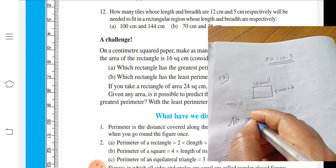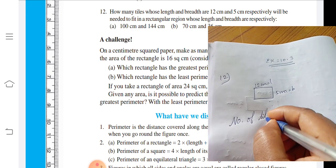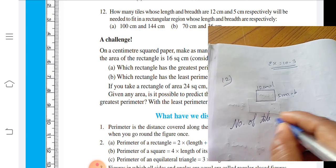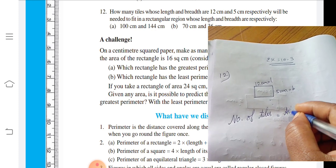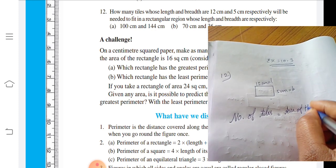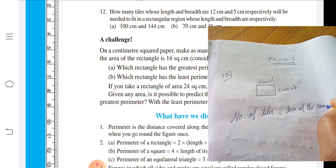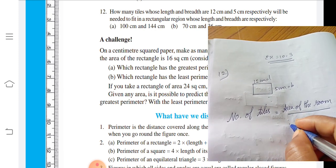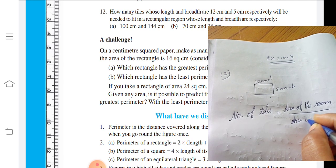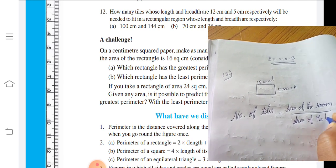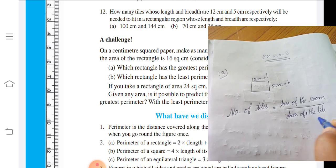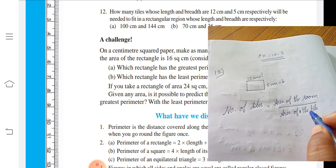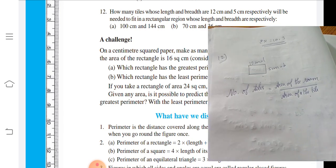Number of tiles - we need to find. Area of the room divided by area of the tile. Area of one tile divided gives us total number of tiles. First, we have to find area of one tile.